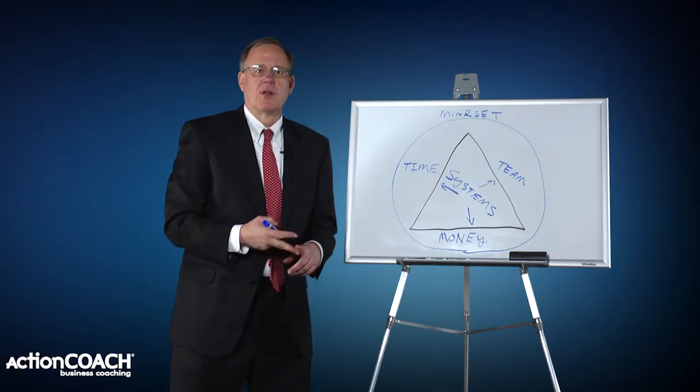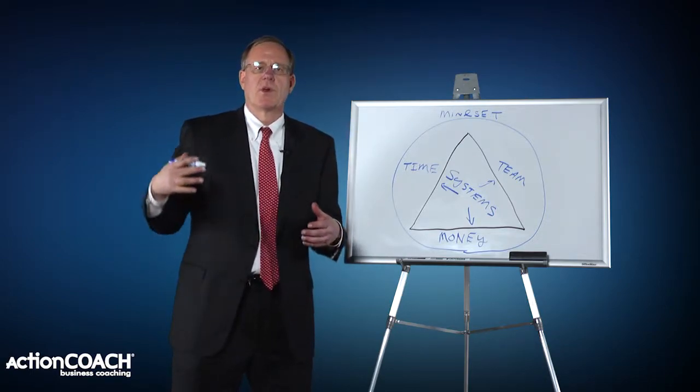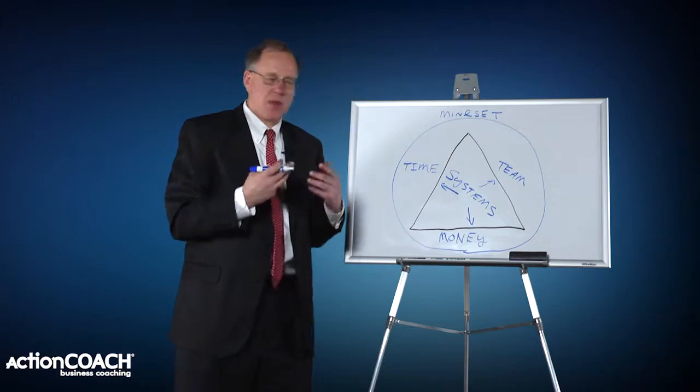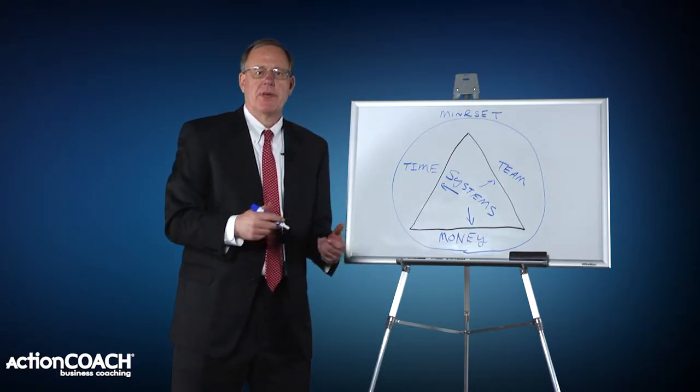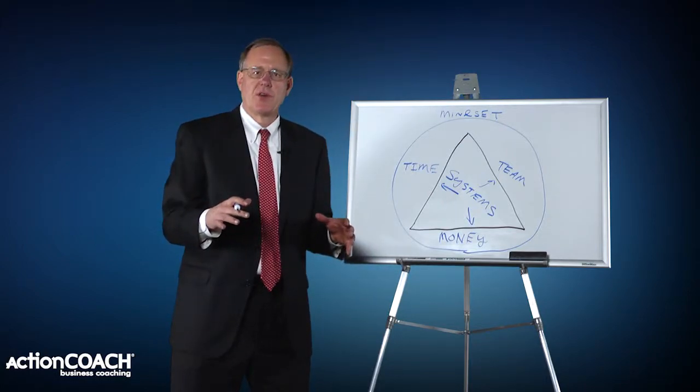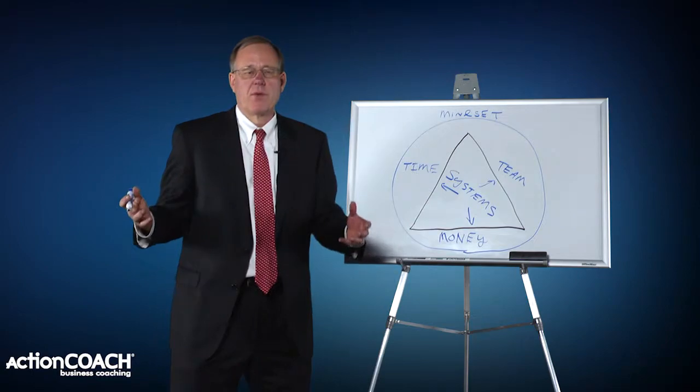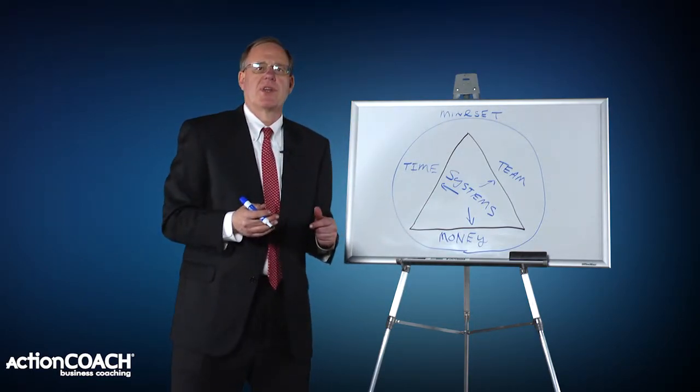You're going to get inconsistent results. Because a system, that's the definition of a system, it creates something that's repeatable where you get systematic outcomes that are the same. And the fourth thing that happens if you get this wrong is you become people-dependent. So what happens is you've got a key person in your business who leaves, and all of a sudden you're in big trouble because you don't have a system that you can plug the new person into.